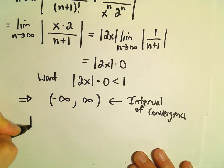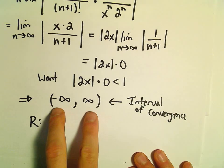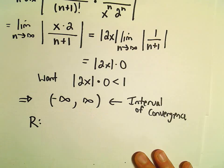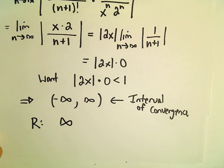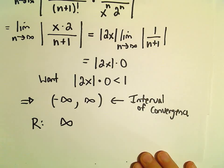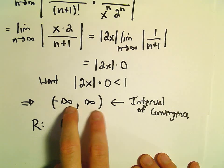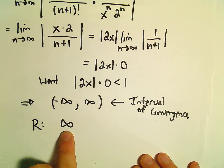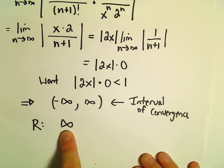In this case, if you think about the length of this interval from negative infinity to positive infinity, that's just infinity. So we would say the radius is also infinity. The interval of convergence is all real numbers, and the radius is positive infinity.